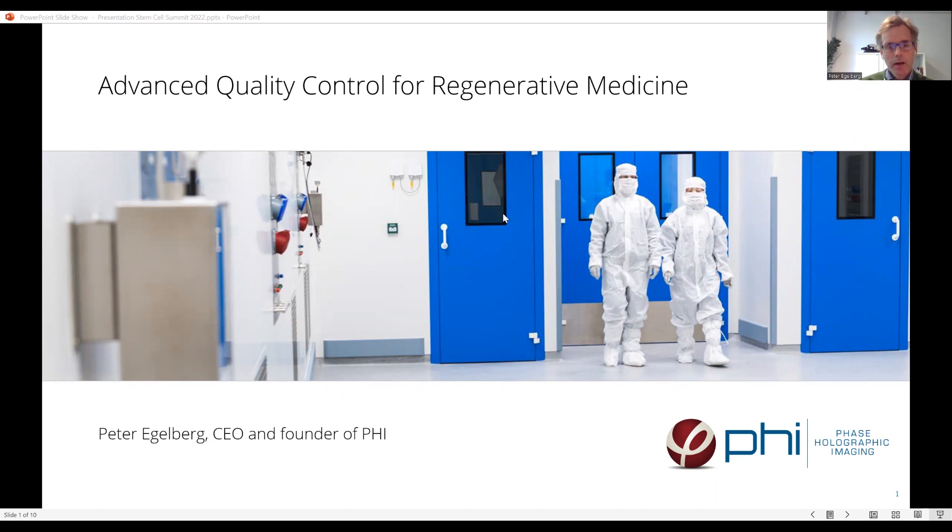PHI is founded on the idea to replace the microscope objective or lens with a computer algorithm. At the time, this technology did not have a name. Today, it is known as quantitative phase imaging, or QPI for short.